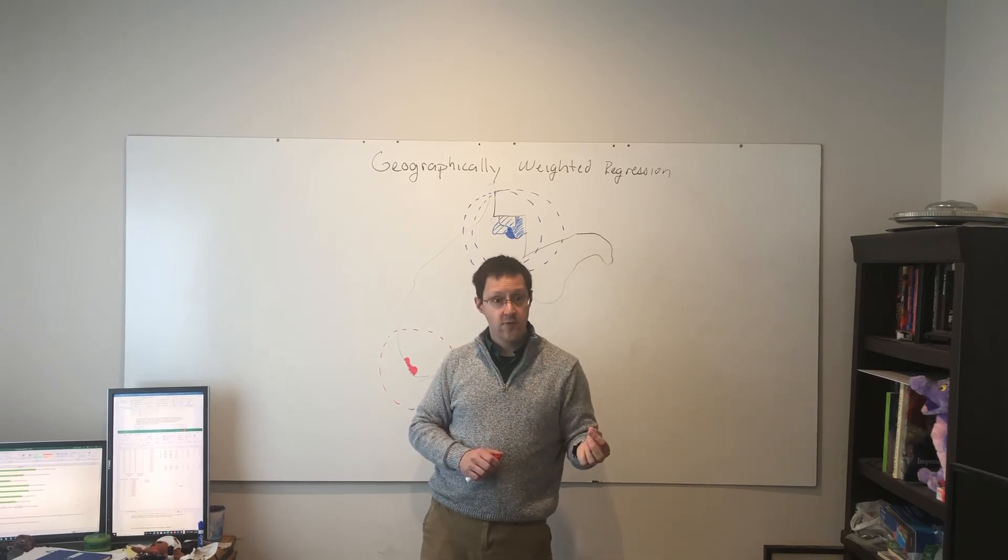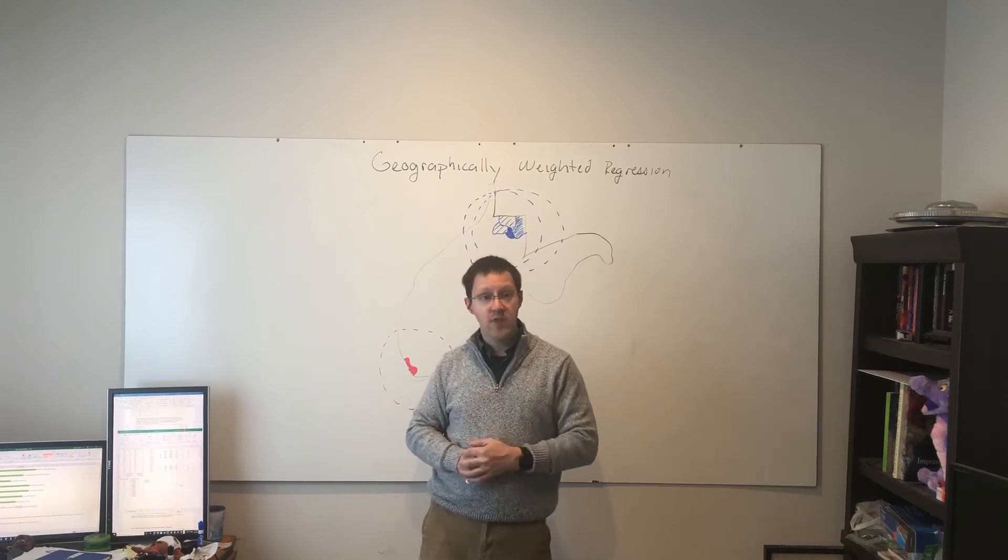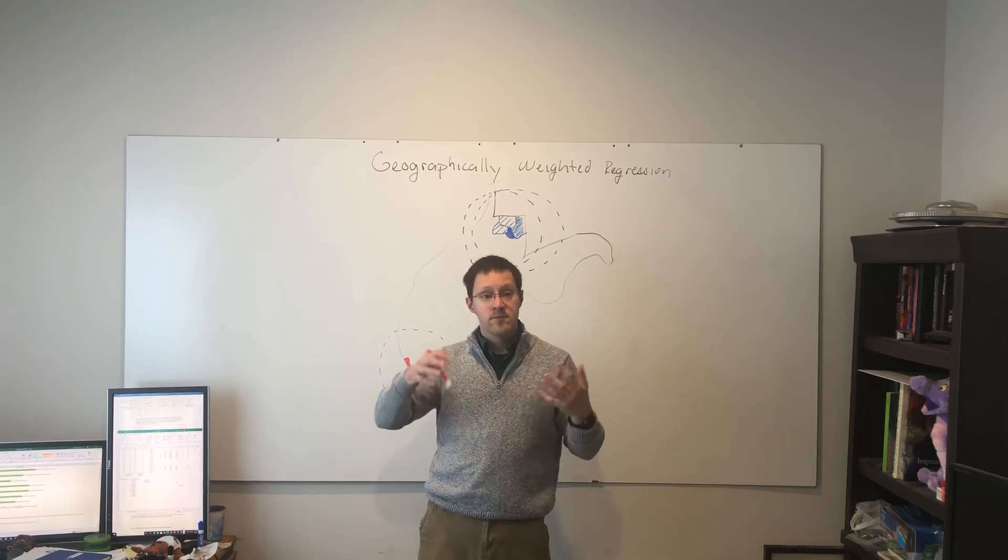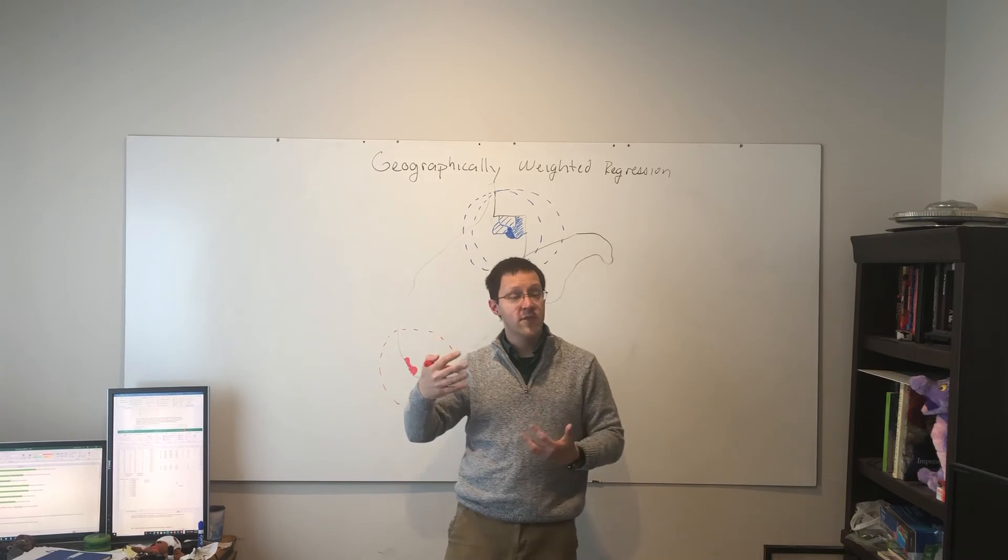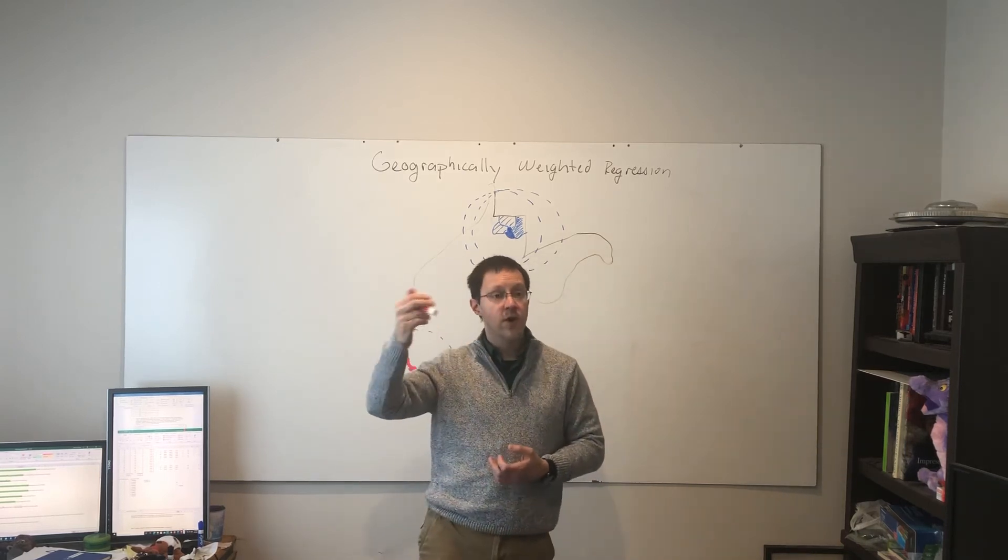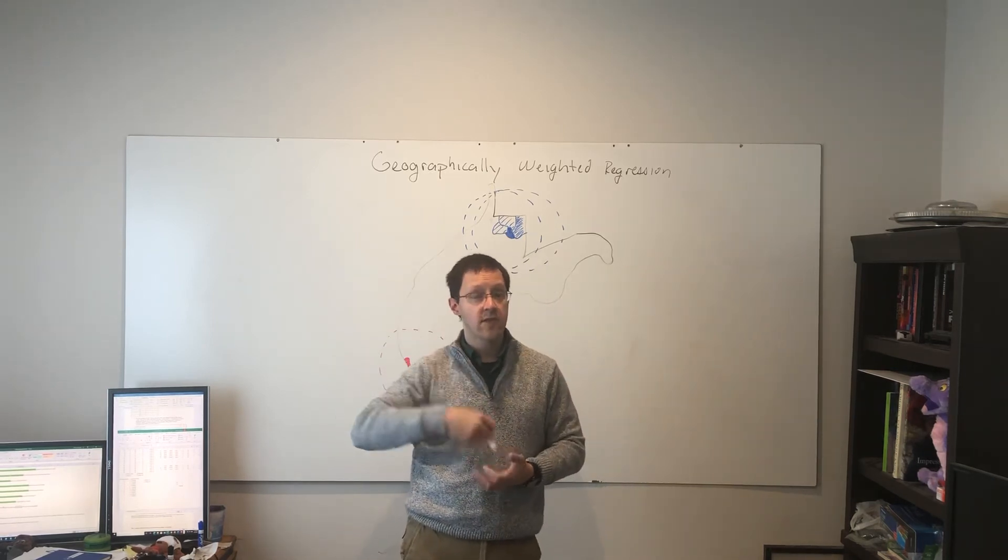Likewise, for the r-squared. The local r-squared. It will tell you it's a strong relationship in one area, a weak relationship in the other. But, you're going to be seeing trends and making statements about parts of the state. To say, in the northern part of the state, the relationship is strong. In the southern part of the state, the relationship is weak.